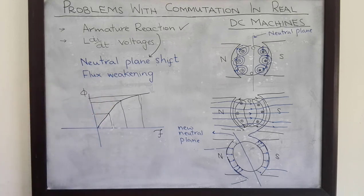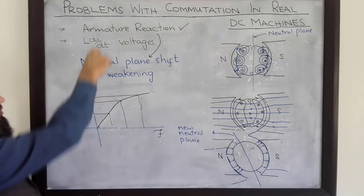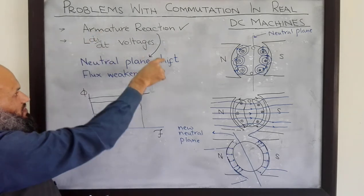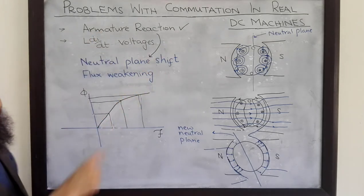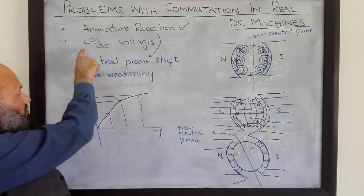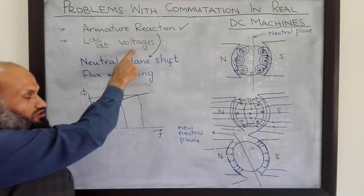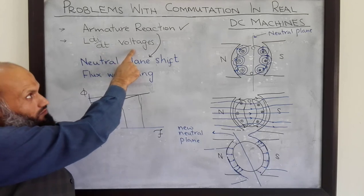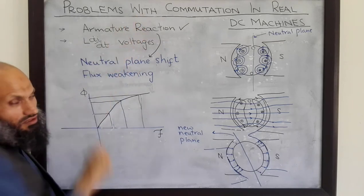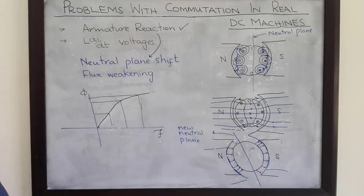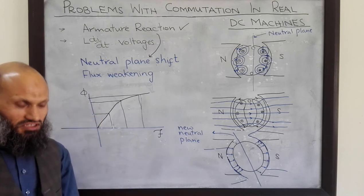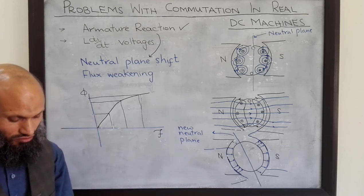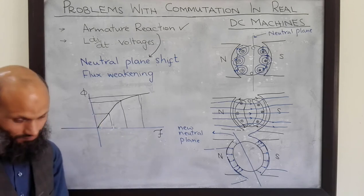So these are the problems associated with armature reaction. In the next lecture, we shall talk about the problems in commutation of real DC machines, and then later we shall talk about solutions to these problems.